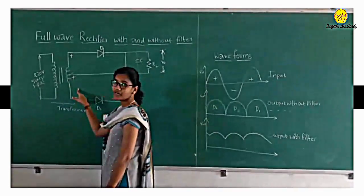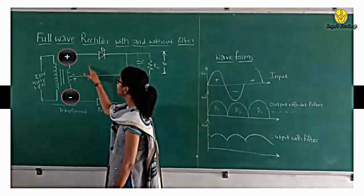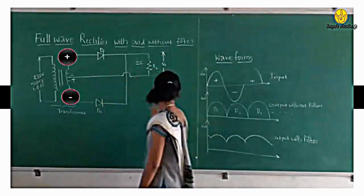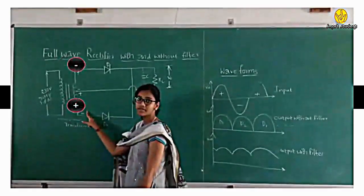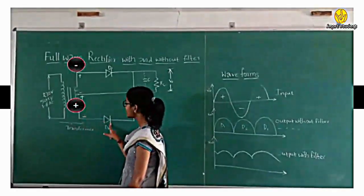During a positive half cycle, the diode D1 conducts. Whereas during the negative half cycle, this diode being forward biased as the negative signal becomes forward bias, this D2 conducts and the output appears across the load.